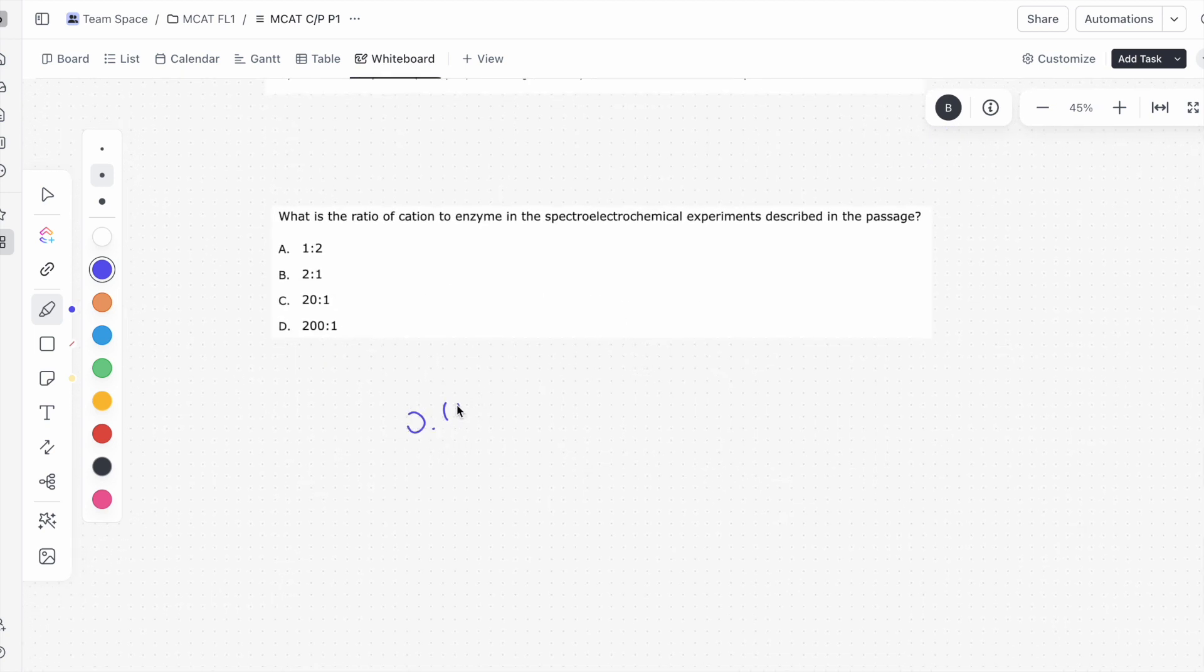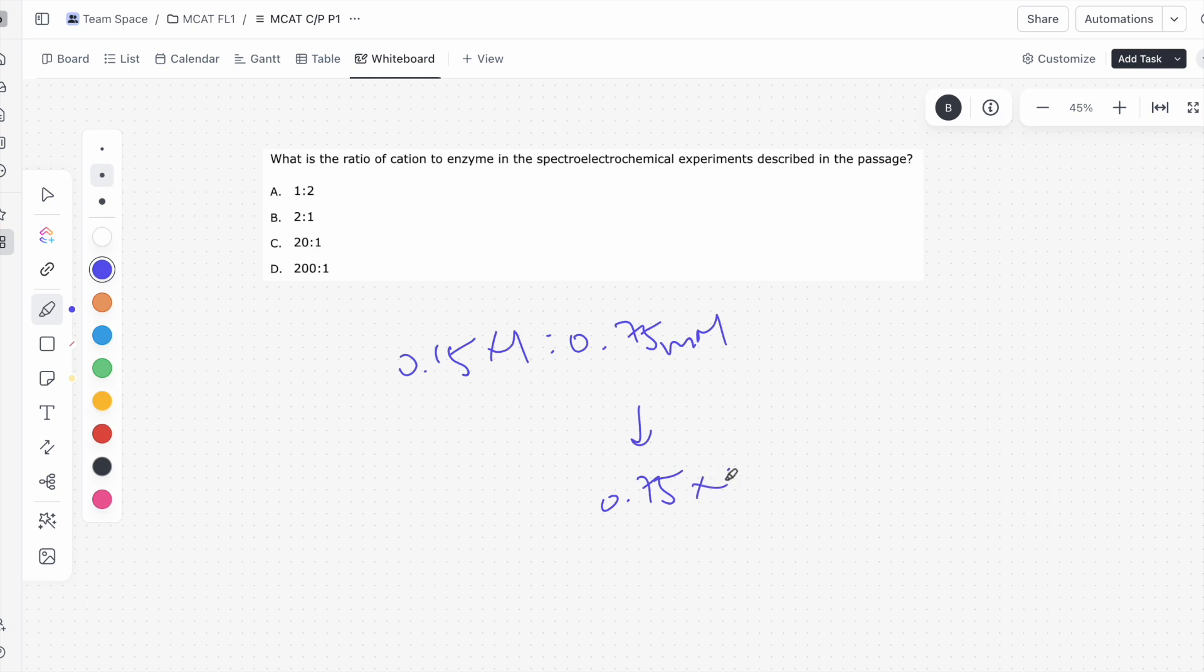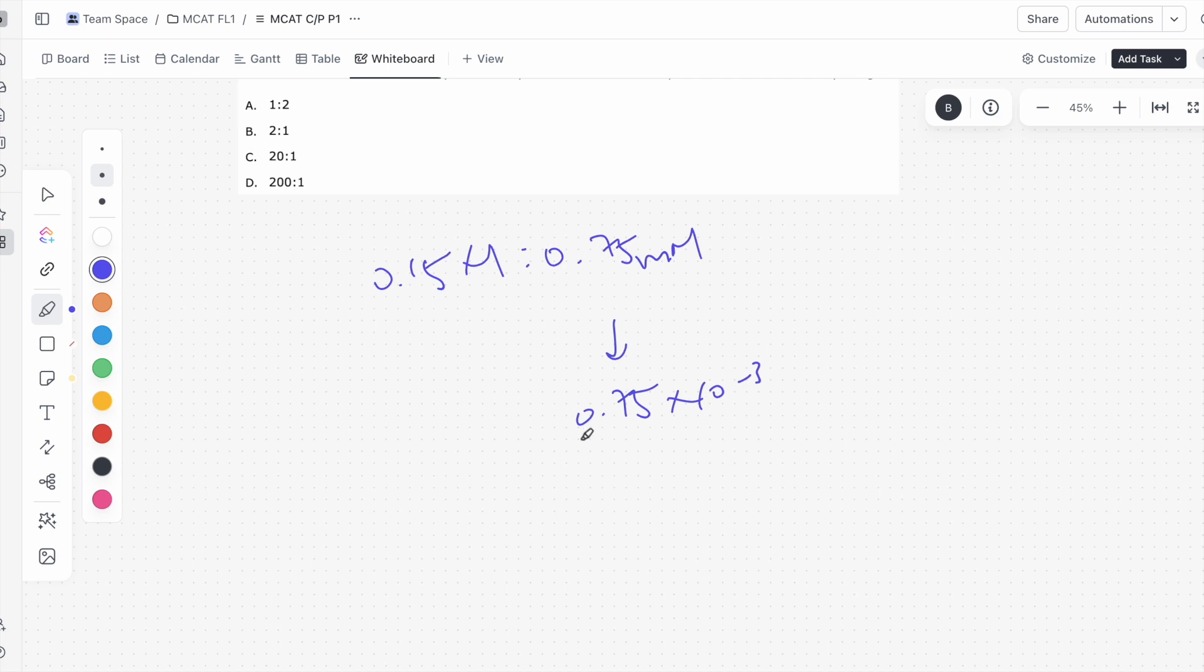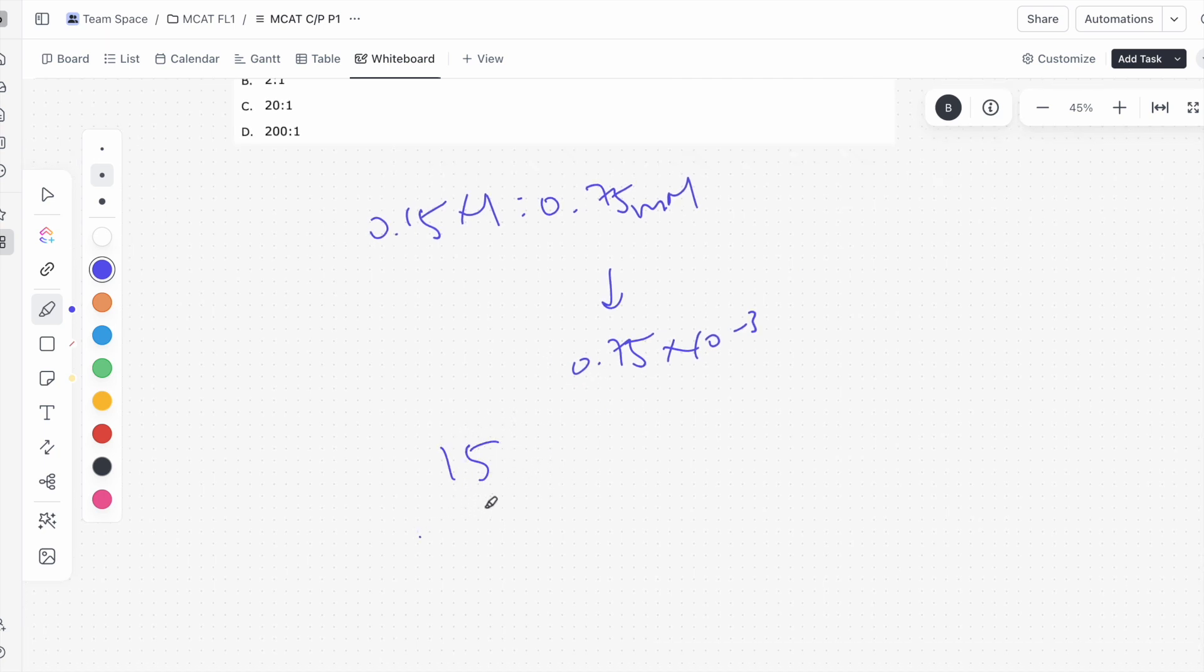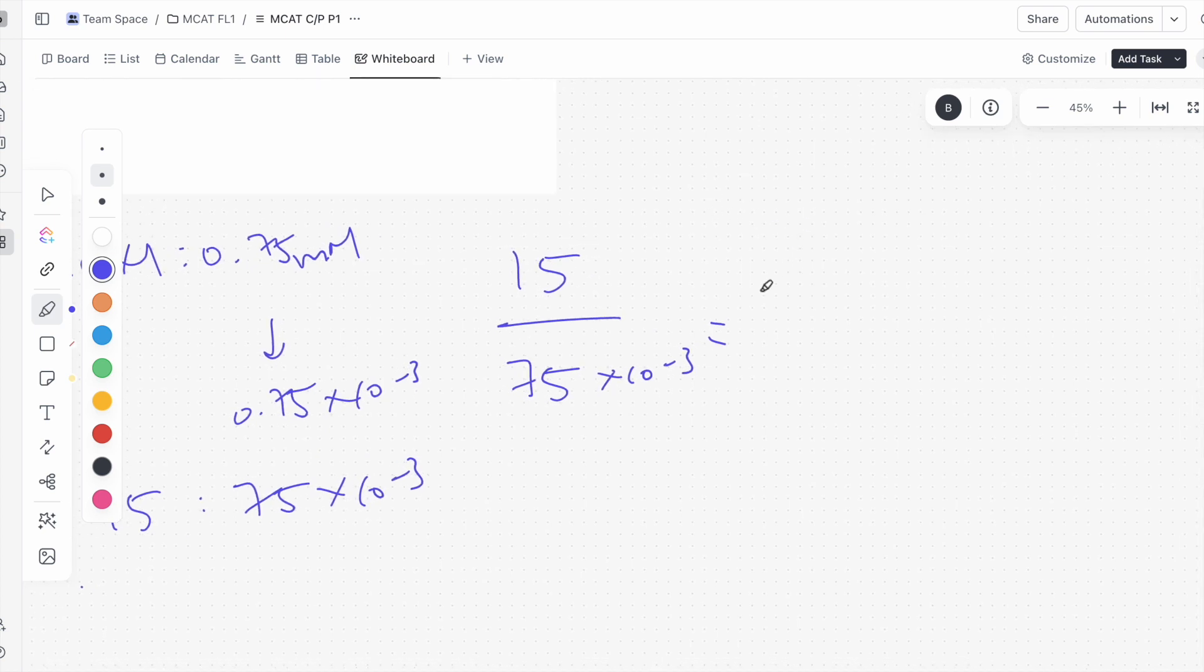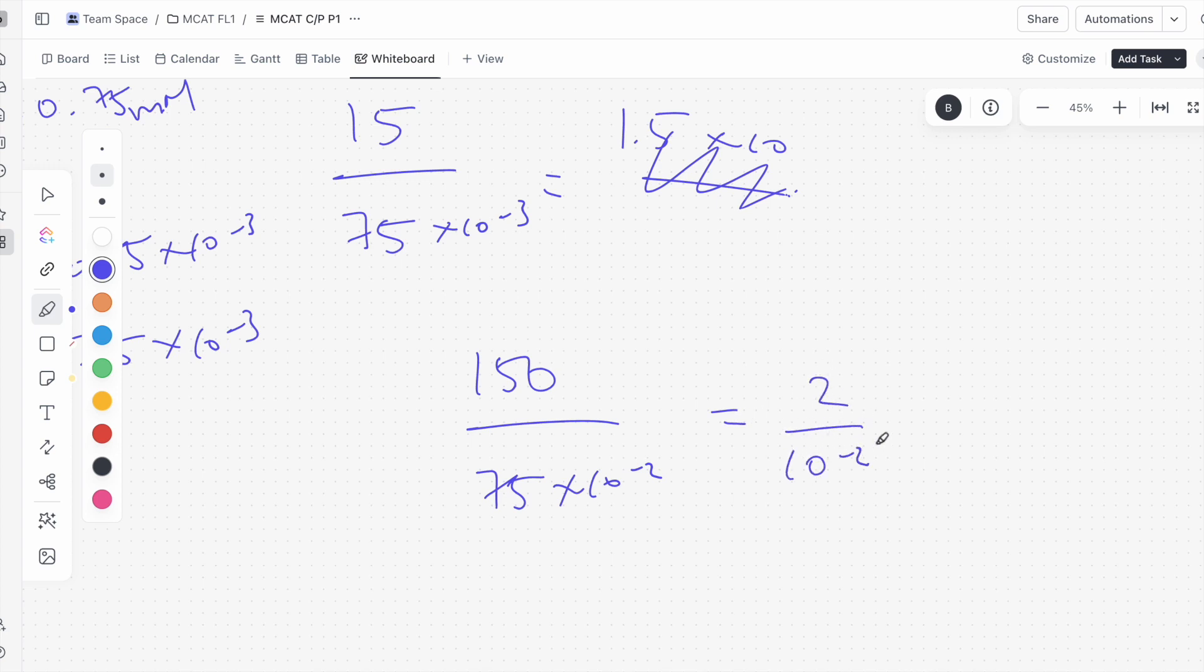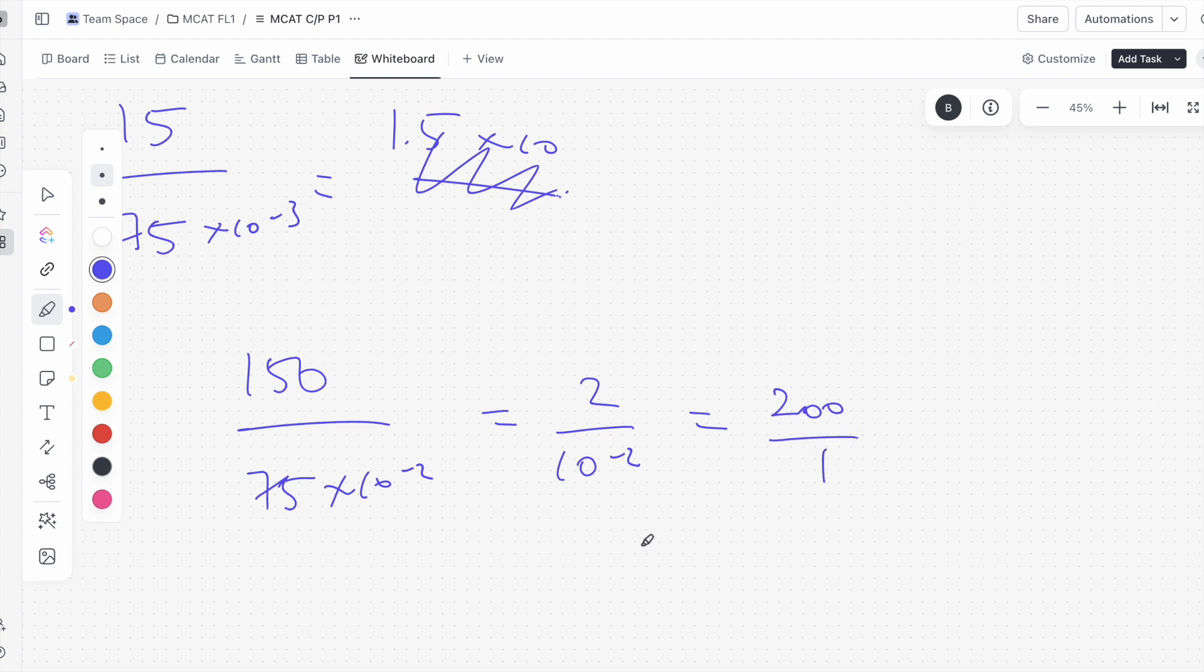So what is the ratio? We have 0.15 molar. We compare that to 0.75 millimolar, and you should know the conversion becomes 0.75 times 10 to the negative 3. So if we change this into standard units, you basically have 15, well not standard units, but more digestible units. You have 15 to 75 times 10 to the negative 3. And if you do it like this, you'll notice this is equal to something like 1.5 times 10 divided by, or actually an easier way to do this would be, this is equal to 150, so just multiply the numerator and denominator by 10. 150 divided by 75 times 10 to the negative 2. That becomes 2 over 10 to the negative 2, which is equal to 200 over 1. So the ratio would be 200 to 1.